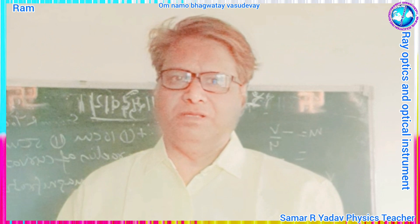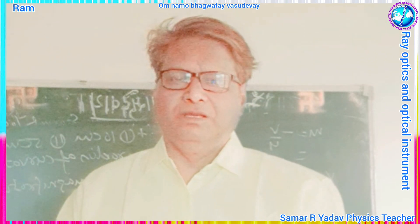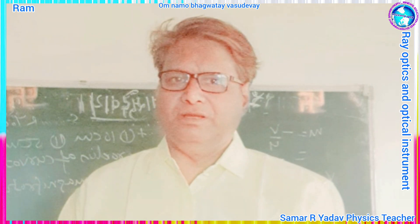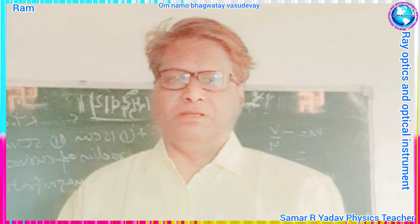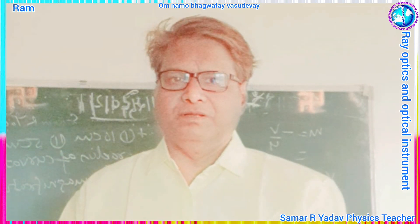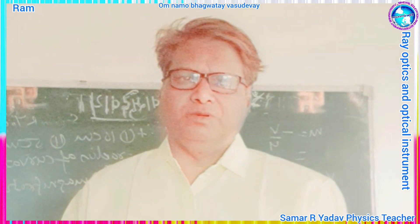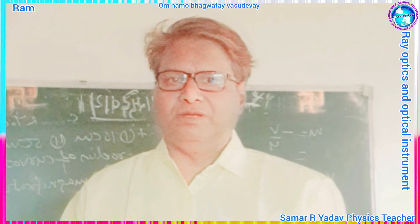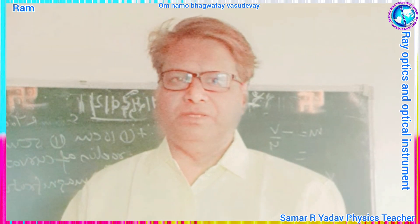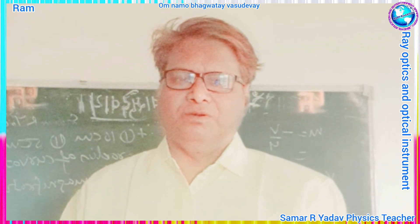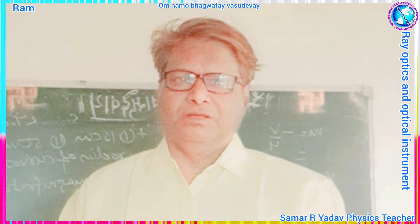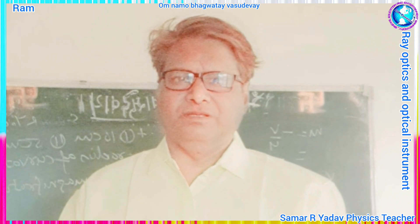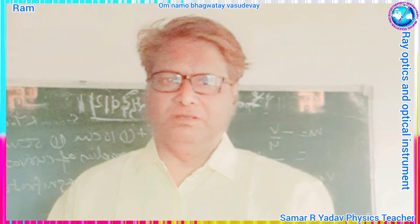Then magnification M is equal to minus V upon U. Solving, we get minus 3, indicating the image is real, inverted, and big in size. For U = minus 5 cm, the image is virtual, behind the mirror, erect, and big in size. Thank you very much.